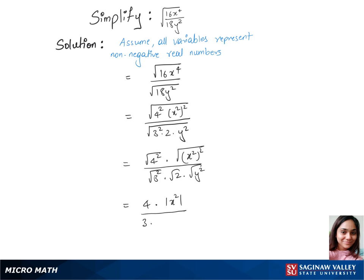Our final answer is 4x square over 3 root 2 y. This is our final answer.